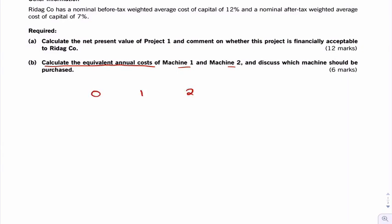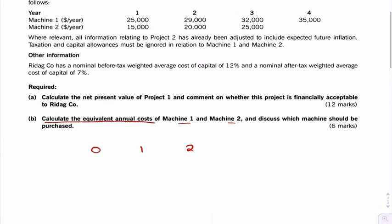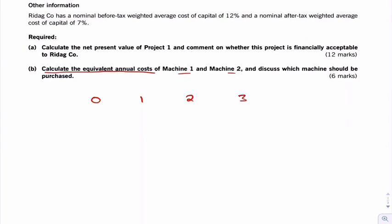Year 0, 1, 2, I think there's four years, 3, 4. And we'll have a look at machine 1 first.